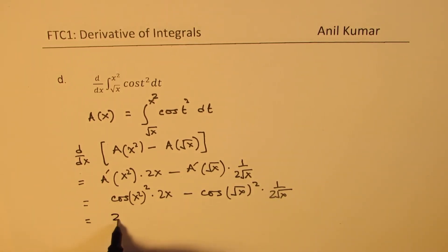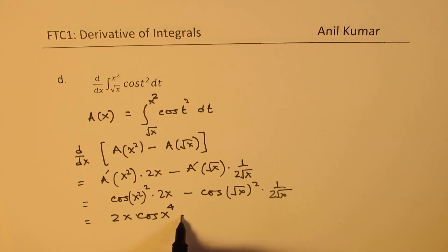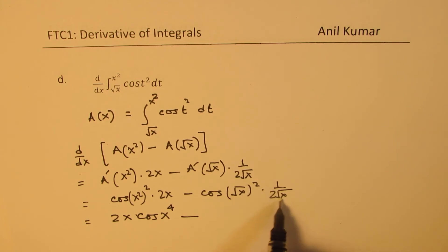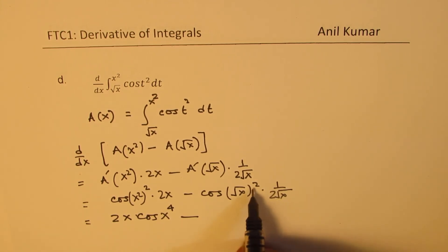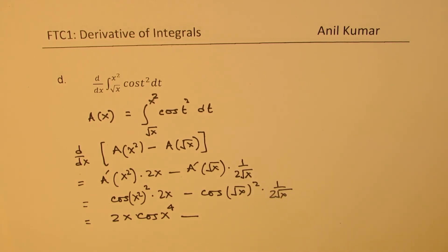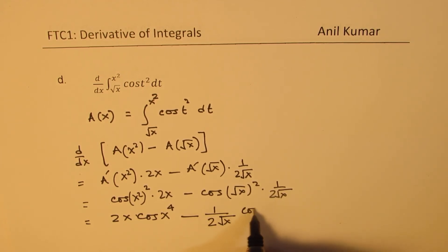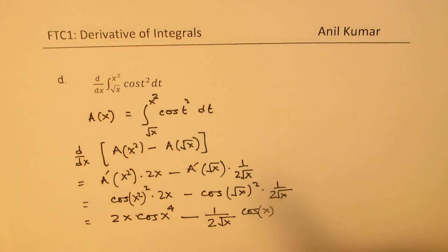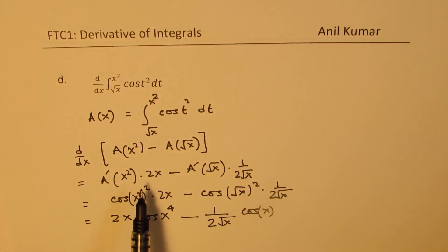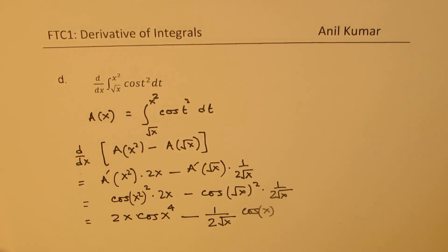Rearranging, the answer is 2x times cos(x⁴) minus cos(x) over 2√x. You may rationalize the denominator if needed. So when both upper and lower bounds are functions, we apply the chain rule once again on both sides. The concept is that the derivative at each bound is multiplied by the derivative of that bound with respect to x.